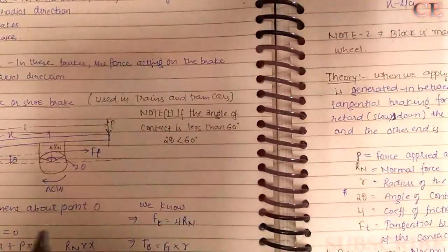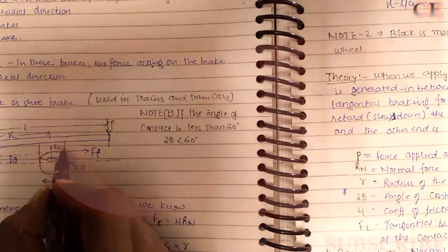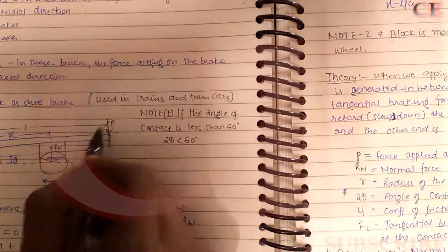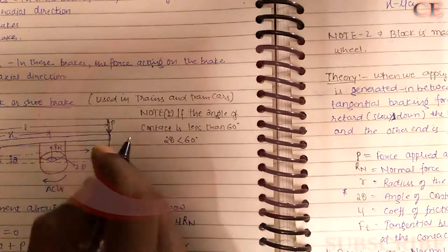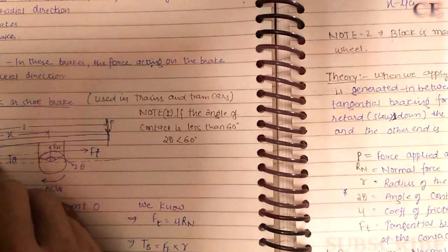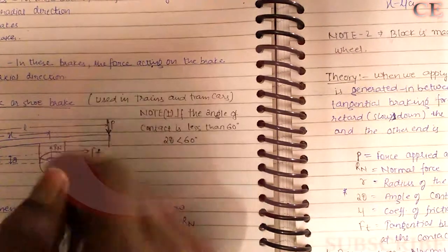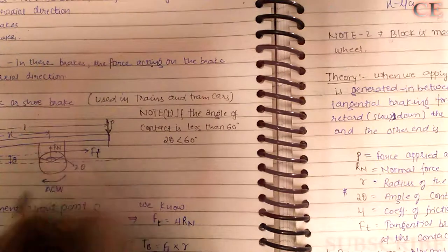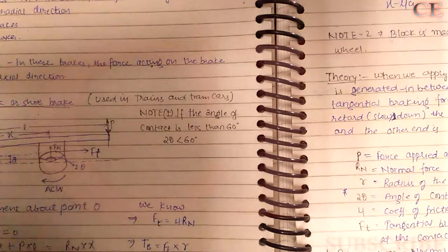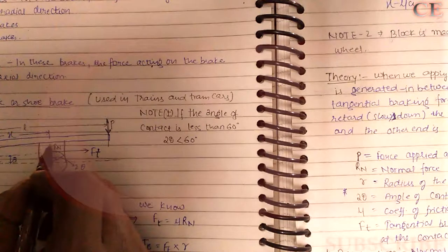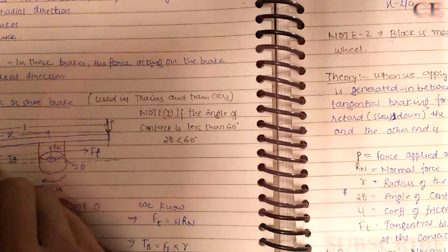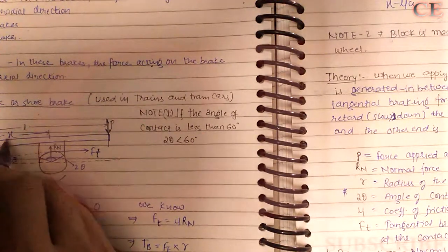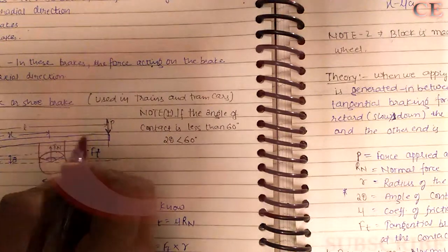When we apply force P on the lever, friction is generated between the block and the wheel. The block is pressed against the wheel or rim. Here, x is the distance between the normal reaction and the fixed point, and l is the length of the lever.